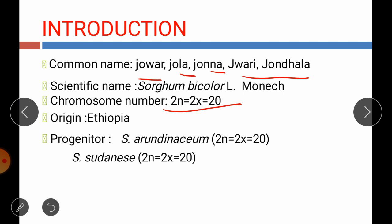Sorghum is originated from Ethiopia, while its progenitors are Sorghum arundinaceum, which has a chromosome number 2n = 2x = 20, and Sorghum sudanense, which also has a chromosome number 2n = 20. So both are diploid species.